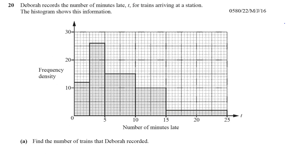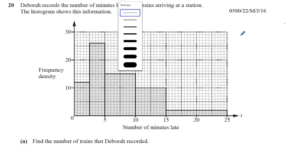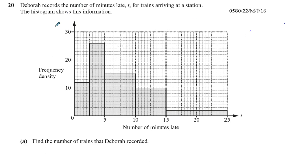The histogram shows this information. A histogram is a diagram which tells you the number of — in this case, trains. It gives you an idea of the number of trains. The first bar represents the number of trains that arrived between 0 and 2.5 minutes late, and the second bar tells you how many trains arrived between 2.5 and 5 minutes late, and so on. It's like a way of displaying a grouped frequency table — data display, displaying the data visually.